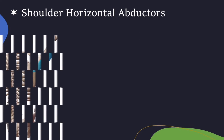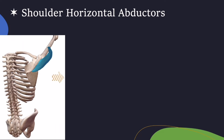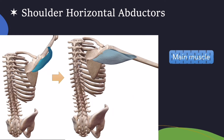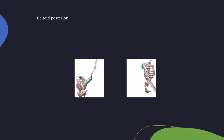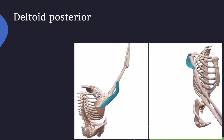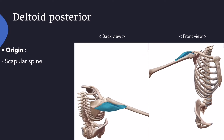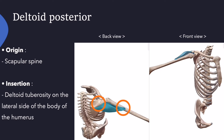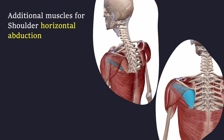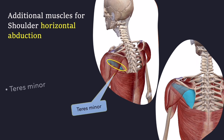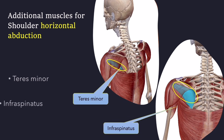The main muscle for shoulder horizontal abduction is deltoid posterior. Deltoid posterior starts from the scapula spine and finishes at the deltoid tuberosity on the lateral side of the body of the humerus. Additional muscles for shoulder horizontal abduction are teres minor and infraspinatus.